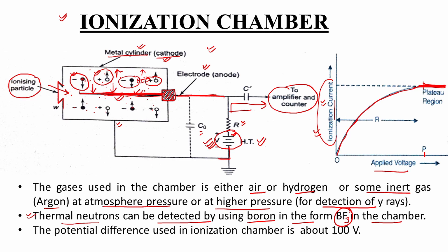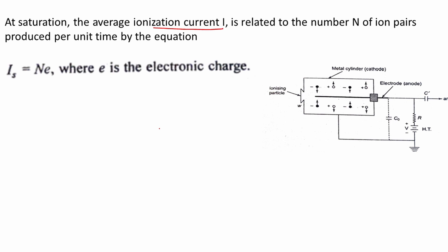The constant current is known as the saturation current. At saturation, the ionization current I_s is related to N — the number of ion pairs or electrons produced per unit time — by the equation: I_s = N × e, where e is the electronic charge. If this saturation current is of the order of microamperes, a microammeter can measure it. For smaller currents, a more sensitive device is needed.